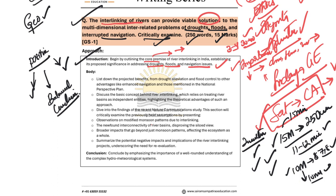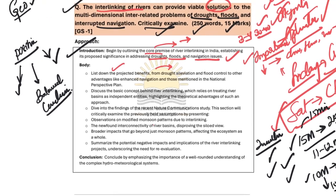Coming to the body of the answer, we need to list down the important benefits of the river interlinking project. We need to talk about improving navigation and mention the national perspective plan. We also need to discuss the concept of river linking and its important assumptions.